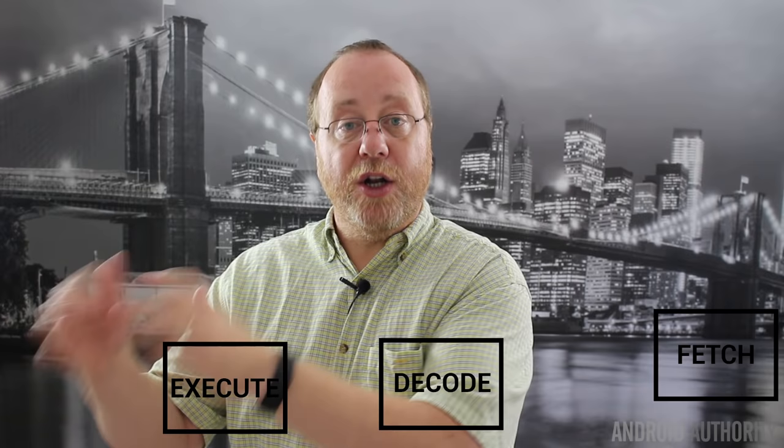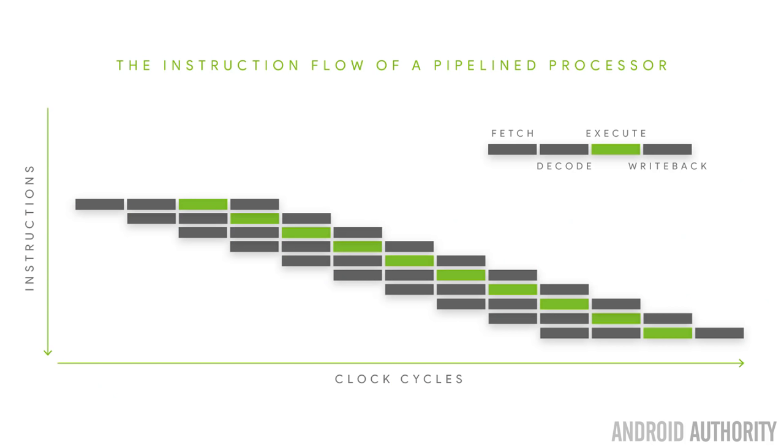When that goes further down the line, the same instruction is being executed, there's one being decoded, and one behind that being fetched. Finally, there could be one in the write back stage, one in execution, one in decode, and one in fetch — four different instructions in the pipeline at the same time. That means every clock cycle something is coming off the write back stage, giving you an instructions per cycle of one.